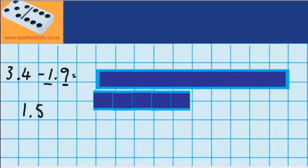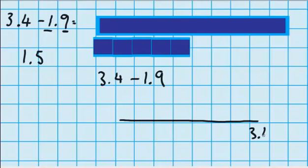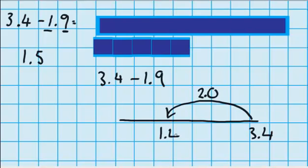Now let's see if we can use one of our strategies to answer this question without materials. We've got 3.4 and we want to take away 1.9. Using a number line, I could put 3.4 here and take away this amount. I know 1.9 is really close to 2 wholes, so I'm going to take away 2 wholes: 3.4 minus 2 gives me 1.4. But I've taken away 1 tenth too many, so to fix that I'm going to jump back up 1 tenth: 1.4 plus 0.1 gives me 1.5.